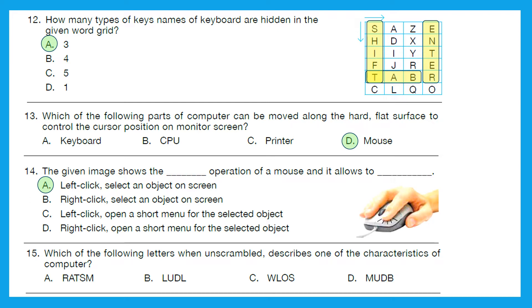Question 15: Which of the following letters when unscrambled describes one of the characteristics of computer? So let's first unscramble all the options. A will give us smart - yes. B will give us dull - no, computers are not dull. C slow - definitely they are not slow. And last is dumb - not at all. So the right answer is A, smart.